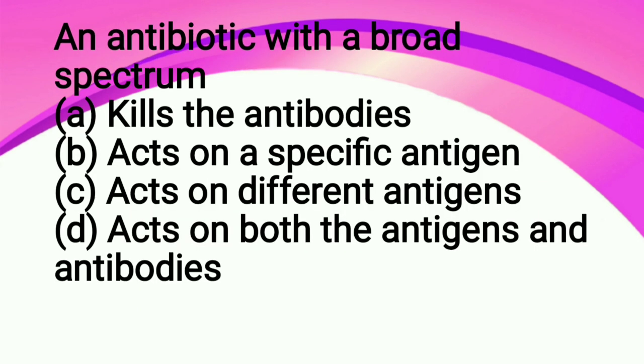An antibiotic with broad spectrum: option A kills the antibodies, option B acts on a specific antigen, option C acts on different antigens, option D acts on both antigen and antibodies. So a question is that an antibiotic which is broad spectrum and an antibiotic which is narrow spectrum.